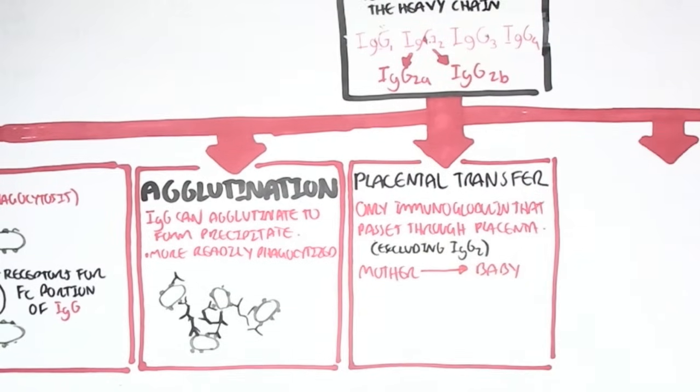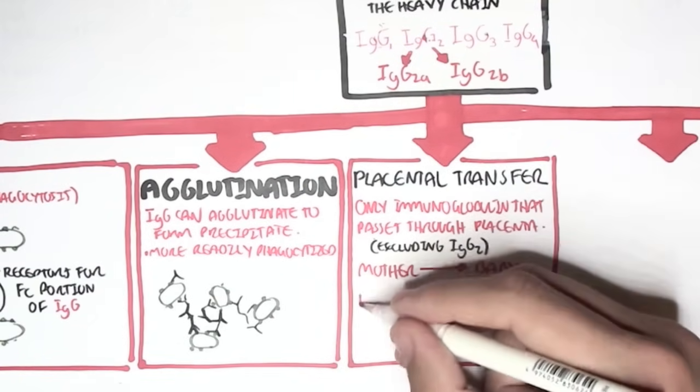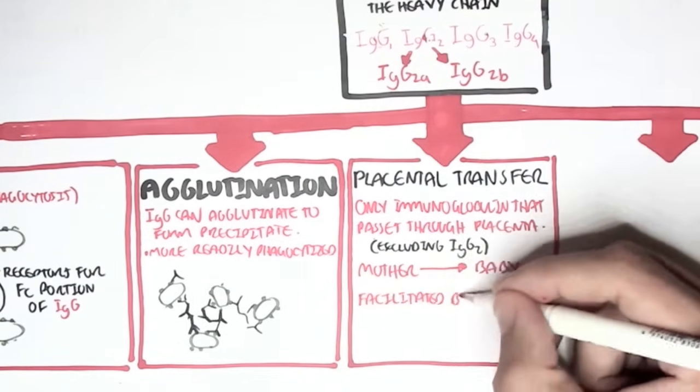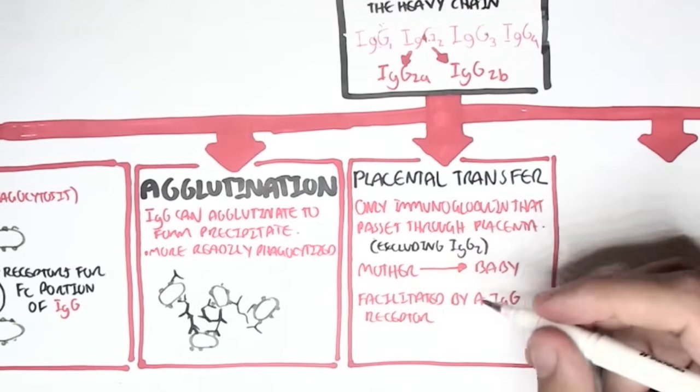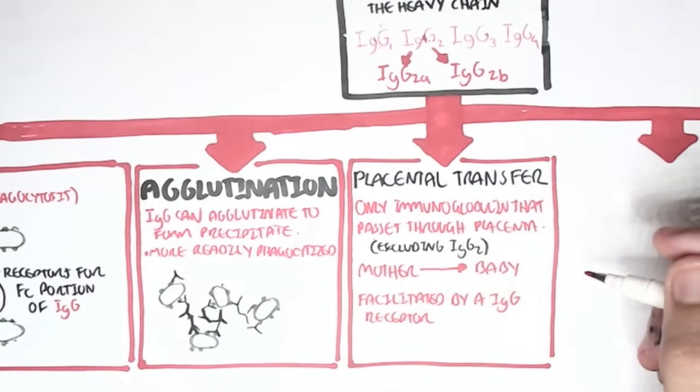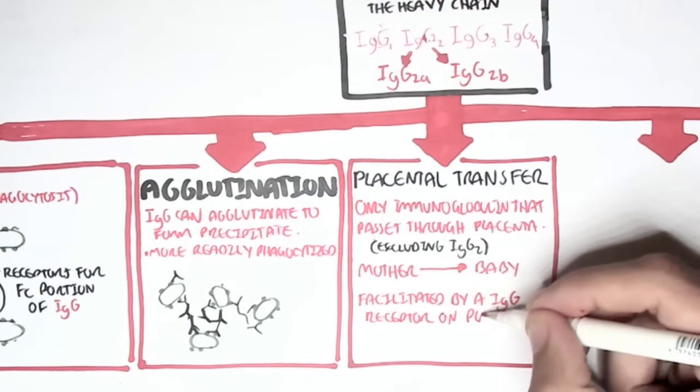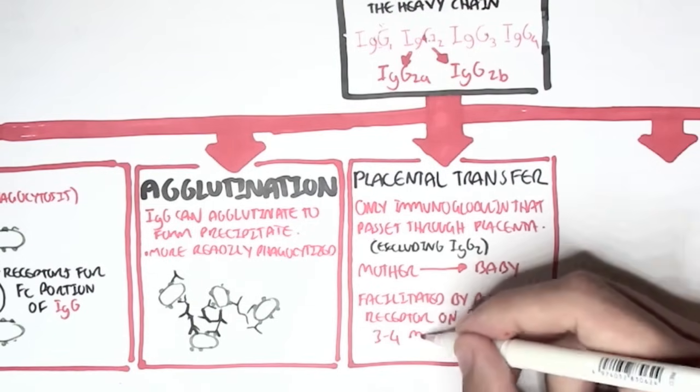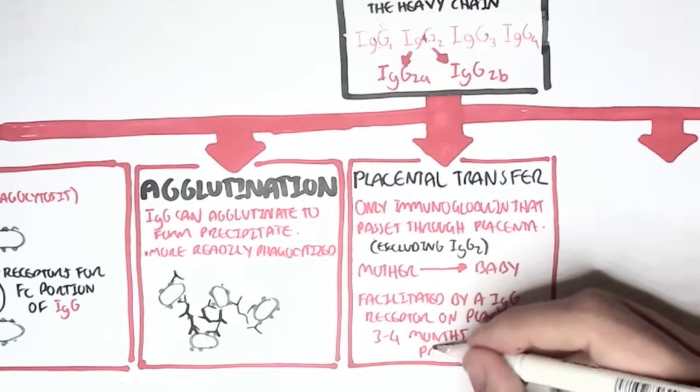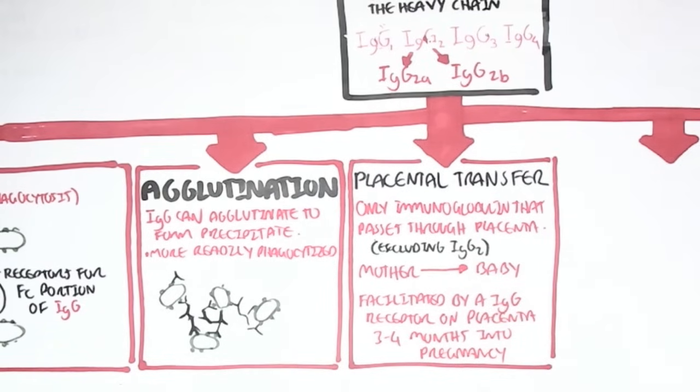has IgG antibodies for specific things. This immunity will pass onto the baby. And this is facilitated by the IgG receptor on the placenta, which is expressed about 3-4 months into pregnancy. So it is the only antibody that is transferred to the baby from the mother.